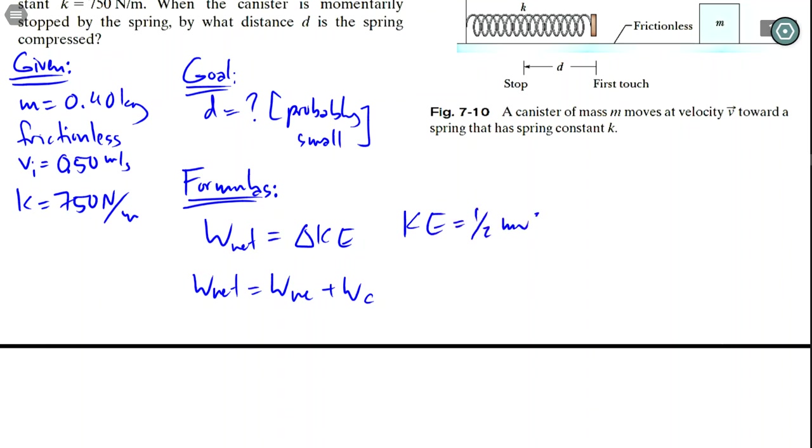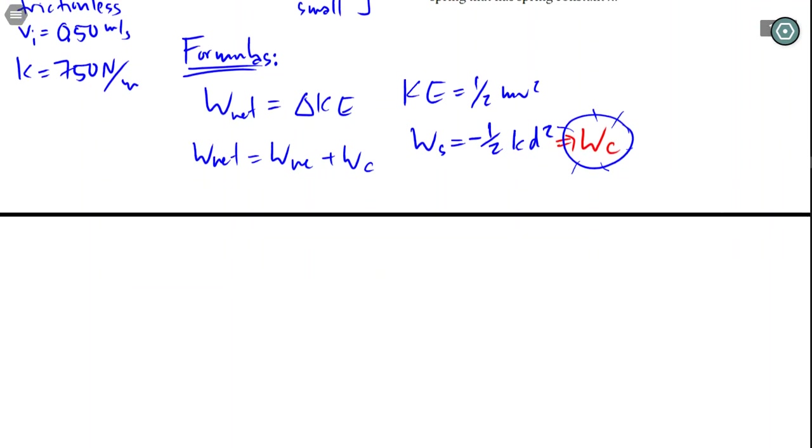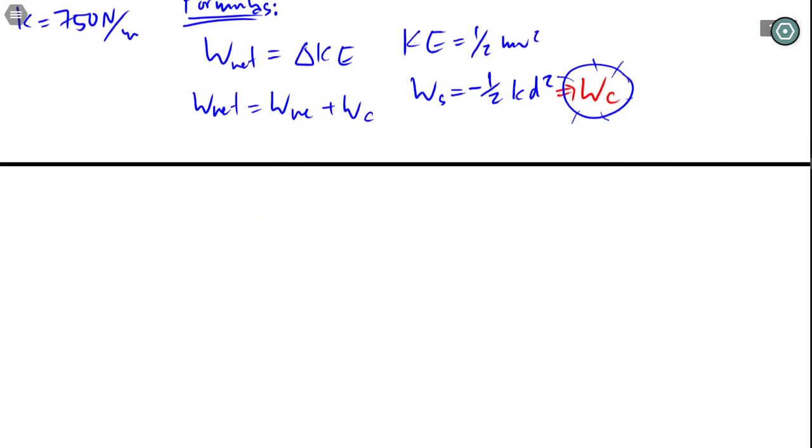Other formulas we'll need: kinetic energy and also work done by the spring, which actually is our conservative force, is negative one half k x squared, or in this case it's going to be d. So this is actually our work done by conservative forces. And let's see what we get. You're actually good to go. This problem is actually not too bad.